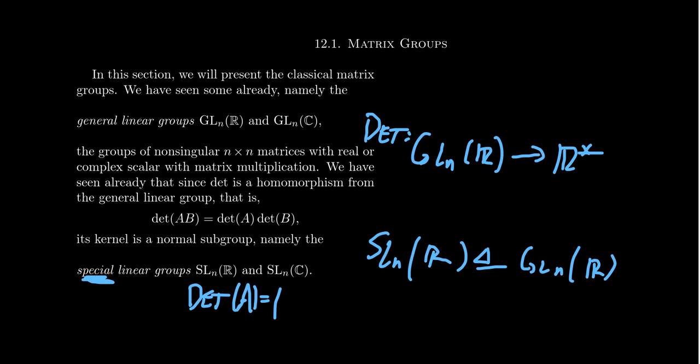In subsequent videos, we'll talk about the orthogonal group — an important matrix subgroup of the general linear group over real numbers — and the special orthogonal group. We'll also talk about the unitary group, an important subgroup of the general linear group with complex coefficients, and the special unitary group. We'll see those in the other two videos for this lecture. The other classical matrix group, the symplectic group, is more complicated and relates to quaternions. For the sake of time, we won't cover it here, but we'll see the orthogonal and unitary groups in the next two videos.